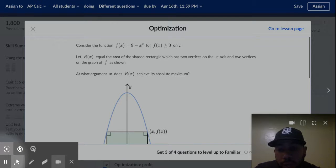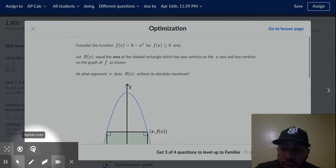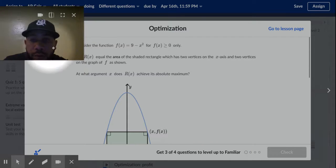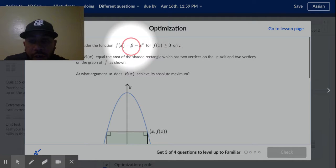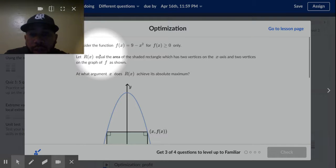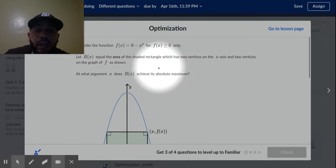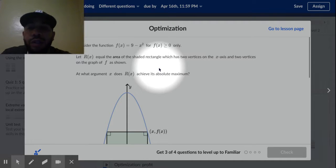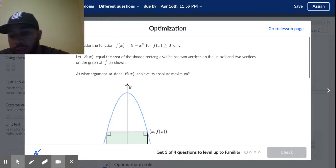You got optimization here. Now optimization, these are the big boy problems. This ain't no joke. So let's look at it. We got a function f(x) and we got R(x) equal to the area. So the first thing we want to write, the first thing we need, we always need an equation. So let's go ahead and do this.